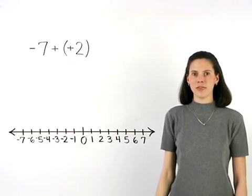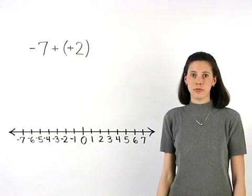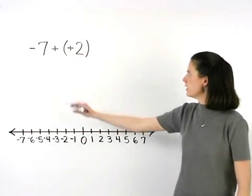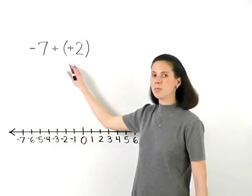So negative seven minus negative two becomes negative seven plus positive two.